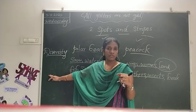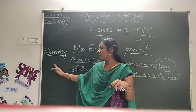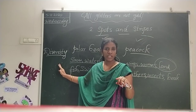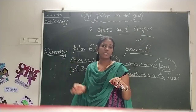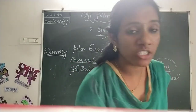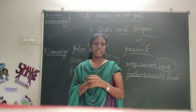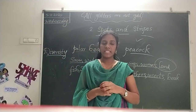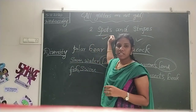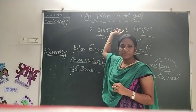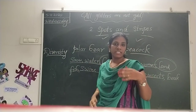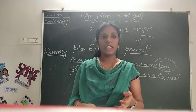Children, you have to complete Activity 2.1 — the first and second questions today itself. In tomorrow's session we will discuss the places where animals live and different habitats. So what is our second chapter? Spots and Stripes. Tomorrow I will ask these questions. Okay children, bye.